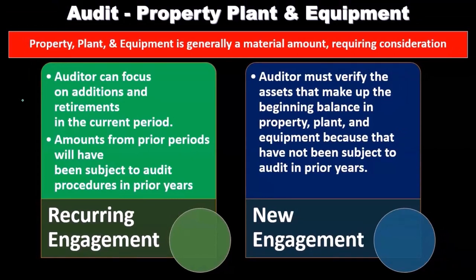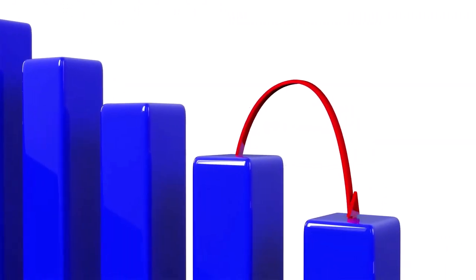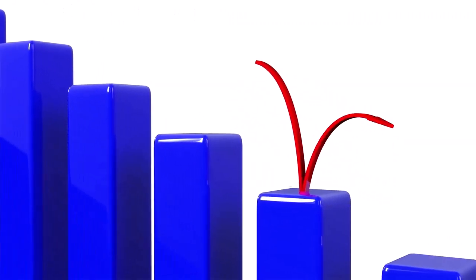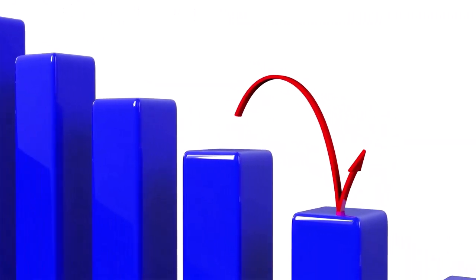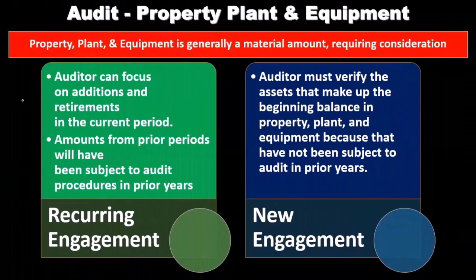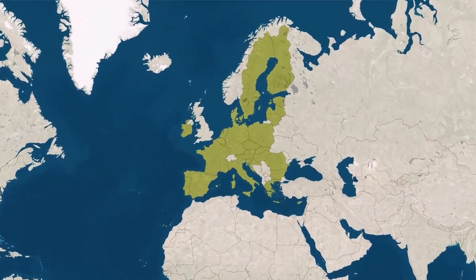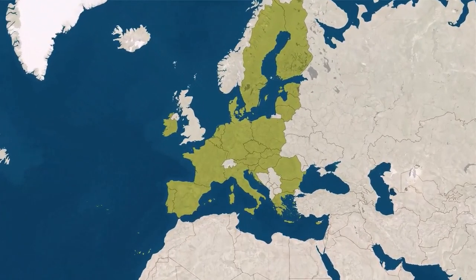We could have a very large schedule of property, plant, and equipment representing different types of assets. We have different depreciation methods that may be used, and we almost certainly will have differences between book value and tax depreciation. Tax depreciation schedules will differ to some degree, and we may have differences between depreciation across different countries and states, so it can be a complex system.